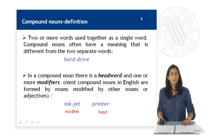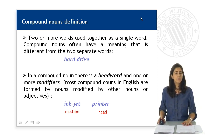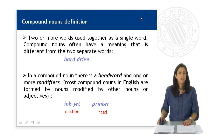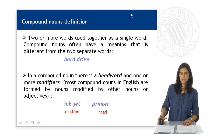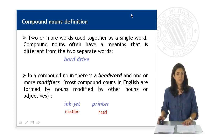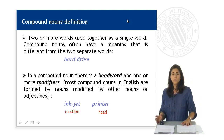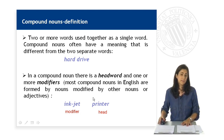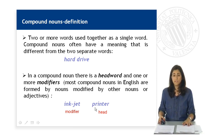We refer to a compound noun when two or more words are used together as a single noun. Compound nouns often have a meaning that is different from the two separate words, as in 'hard drive' — these are two different words, hard and drive, and they have different meanings. In a compound noun there is always a head word and one or more modifiers, as in the example 'inkjet printer,' where inkjet is the modifier and printer is the head.